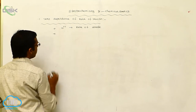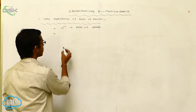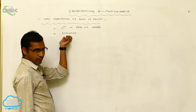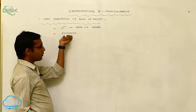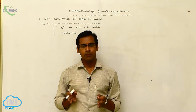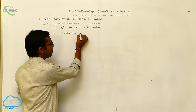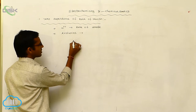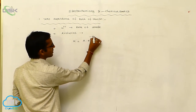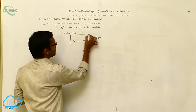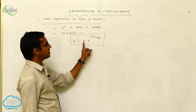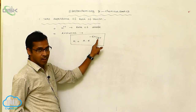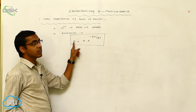The temperature dependence factor on rate of reaction was successfully explained by Arrhenius, a Swedish chemist. Arrhenius gave a simple equation with physical significance. The Arrhenius equation is: k = A·e^(−Ea/RT). Here, A is the Arrhenius pre-exponential factor, Ea is activation energy, R is the gas constant, T is temperature in Kelvin, and k is the rate constant.